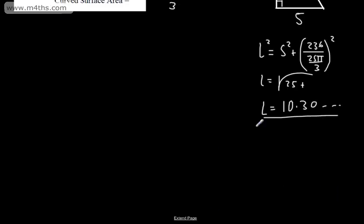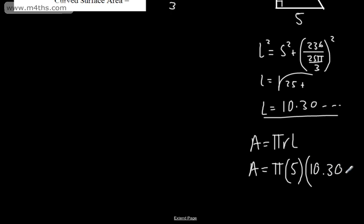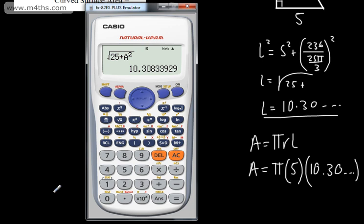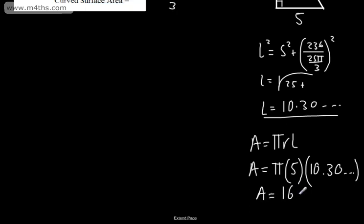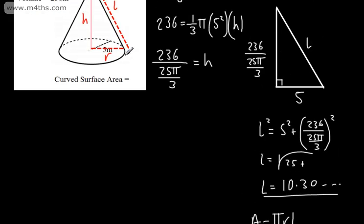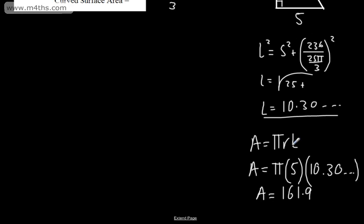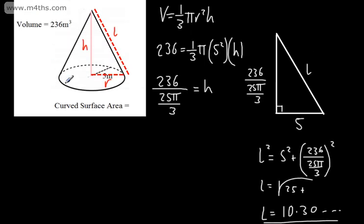So if we want the curved surface area — we don't need the bottom — that's pi multiplied by the radius multiplied by the slant height. So the area is going to be pi multiplied by 5 multiplied by 10.30, and that gives us 161.9 to one decimal place. Remember, this is in meters, so our curved surface area will be in meters squared. If you did need the total area of the solid including the bottom, you would simply add pi r squared, where r is 5.